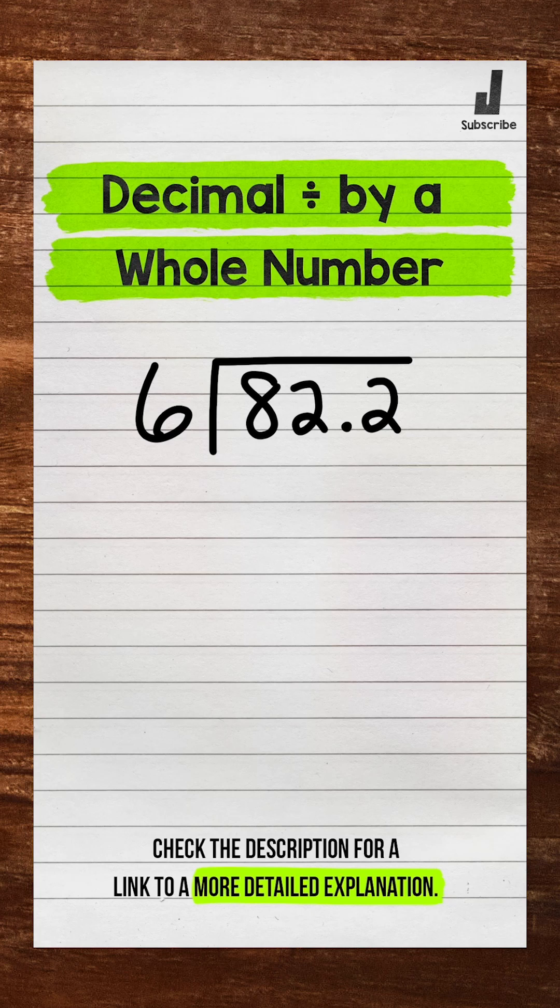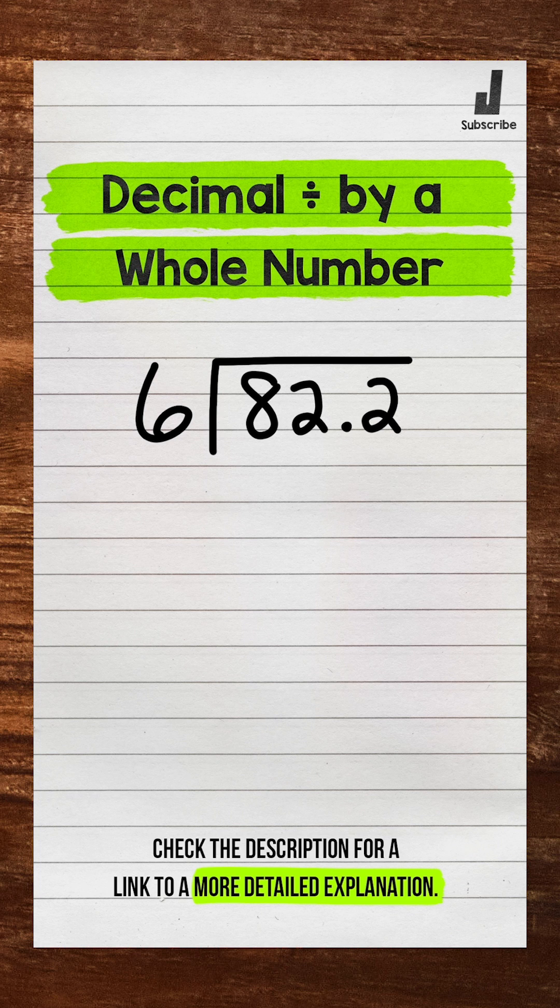This is Math with Mr. J. Let's divide a decimal by a whole number. We have 82 and 2 tenths divided by 6.